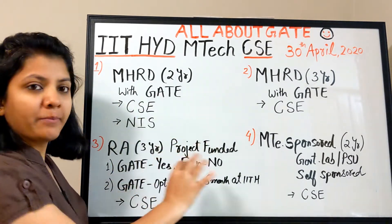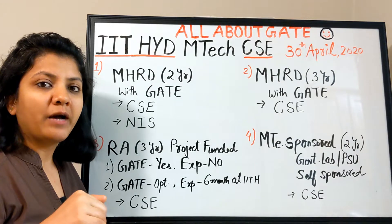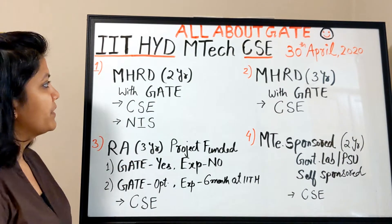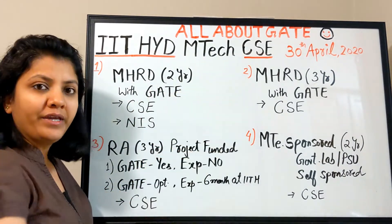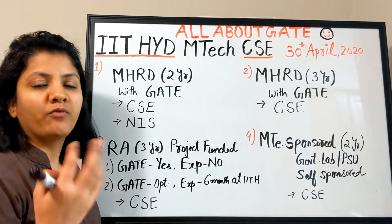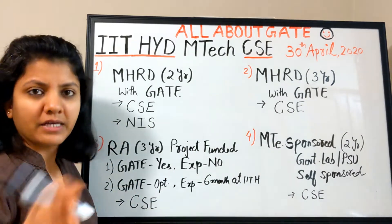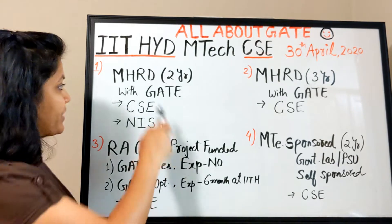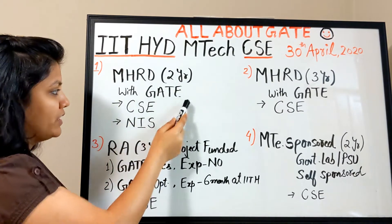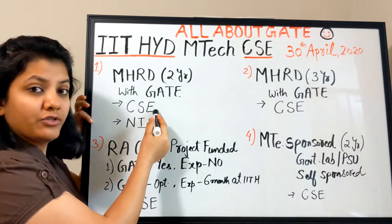There are four different types of programs. The first is MHRD two-year — we all know the Ministry of Human Resources and Development. It's the regular two-year MTech program like those offered at IIT Bombay, IIT Kanpur, IIT Delhi, or IIT Madras. A valid GATE qualification is required. It is offered in computer science and engineering.